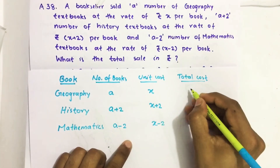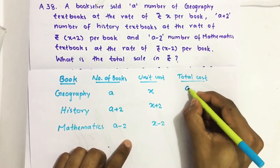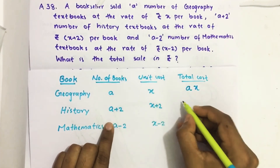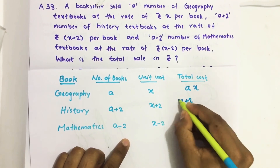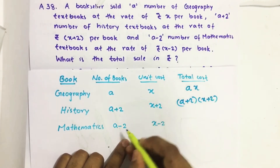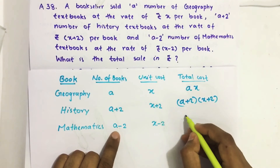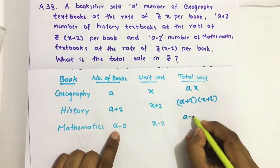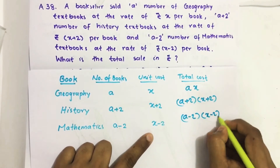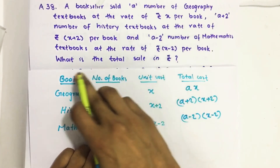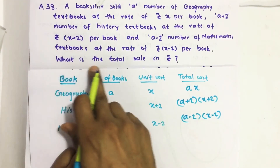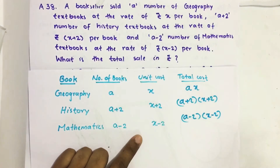Total price for geography books equals a into x. Similarly, history books: a plus two into x plus two. Total price for mathematics books: number of books into unit price, which is a minus two into x minus two. They are asking what is the total sale in rupees.